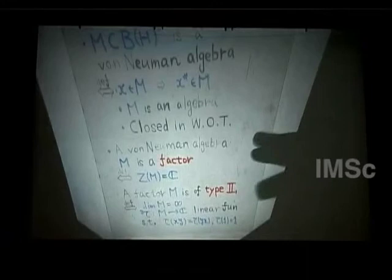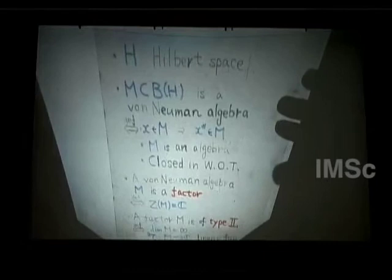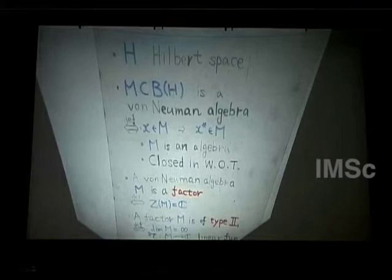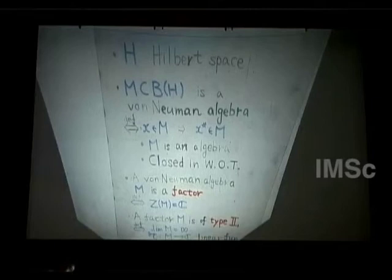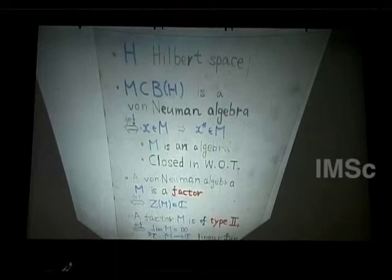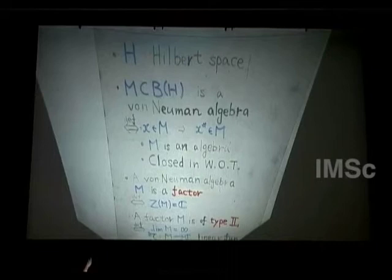Let's start. Since Sturinibusson already gave the definition of von Neumann algebras and factors, let me go very quickly. H is a Hilbert space, and M is a subset of B(H), the set of bounded operators on H. M is called a von Neumann algebra if it satisfies three conditions: it is closed under the star operation (where x* is the adjoint of x), M is an algebra under addition and multiplication, and it is closed in the weak operator topology.